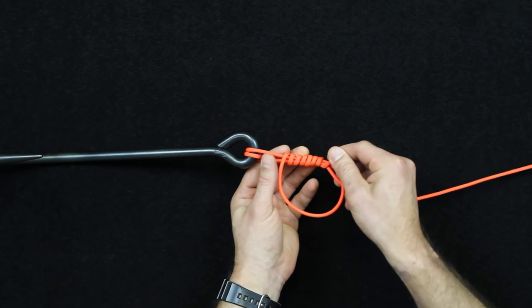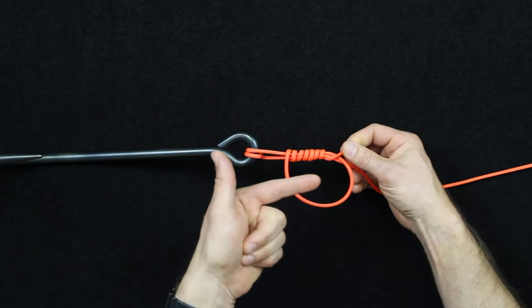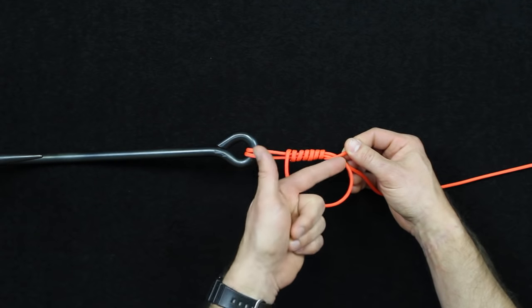Once we have that, the next step is to pull this way with the standing part of the tail here.